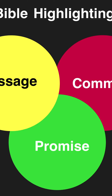Today we're learning something very important — how to highlight. Remember, the Bible was written to teach us how to live life, to remind us of God's promises, and to instruct us so we can live the best that God has planned for us on earth. Today we're going to learn how to highlight messages, promises, and commands using three major colors: red, green, or yellow.